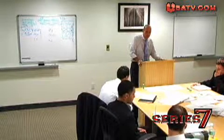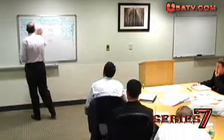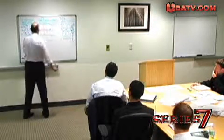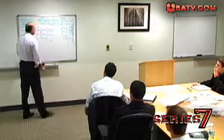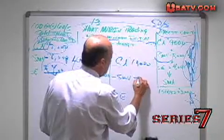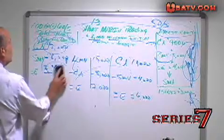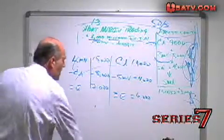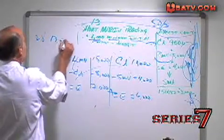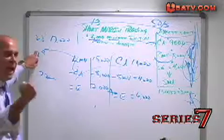Example: a customer has a margin account with a long market value of $15,000 and a debit balance of $8,000 — equity on the long side is $7,000. Credit balance of $10,000, short market value of $4,000 — equity on the short side is $6,000. Question 28: combined equity = $7,000 plus $6,000 = $13,000. Question 29 relates to the long side; question 30 to the short side.